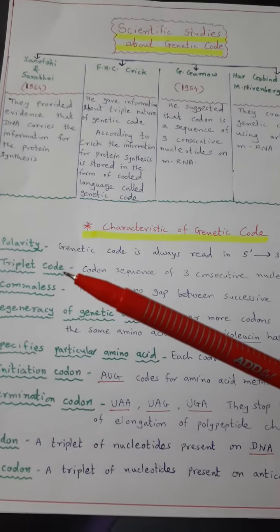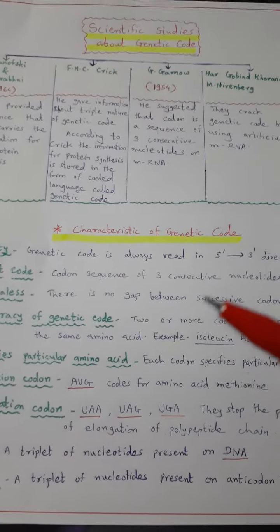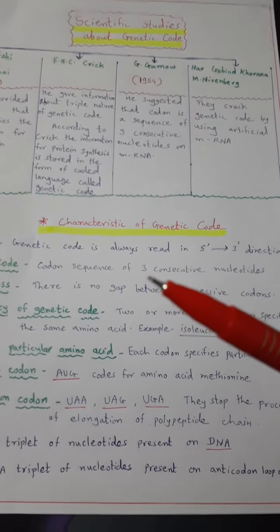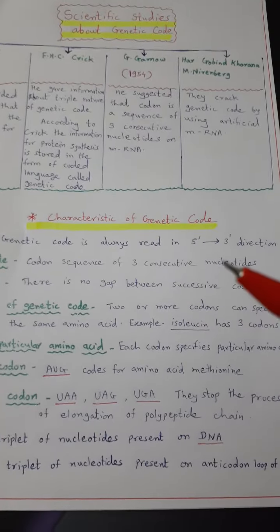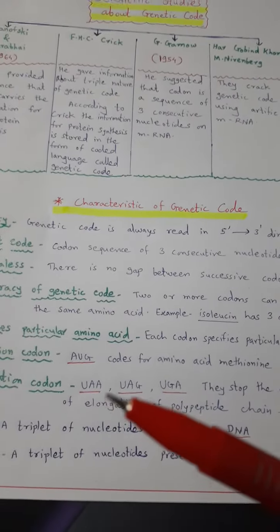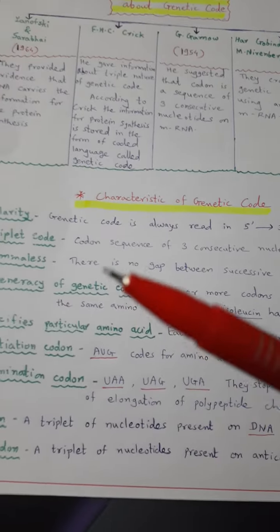The second one is triplet code. The genetic code is mostly a sequence of 3 nucleotides, for example UAA. These are 3 nucleotides.